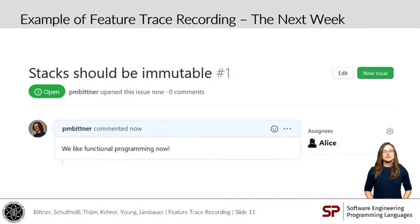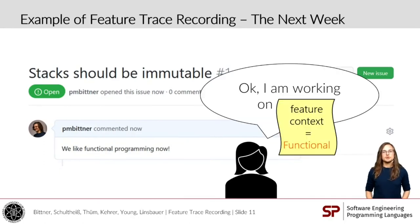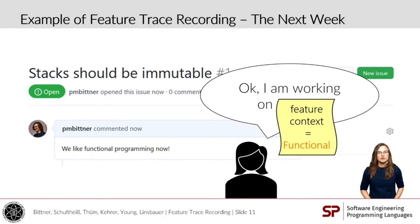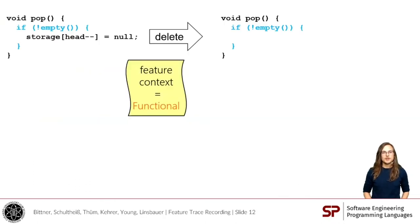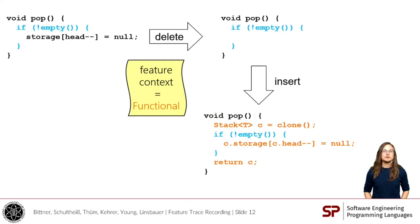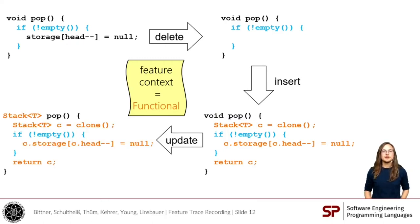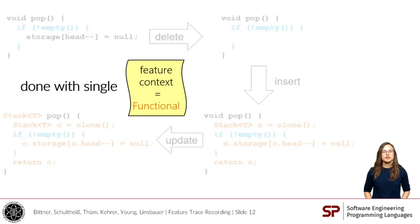The next week, Alice gets a new task: stacks should become immutable. When working on this issue, Alice knows that she's working on the feature functional, and can set the Feature Context accordingly — for example, on commit to version control, or in an integrated development environment. So first, she removes the line that changes the stack's state, which should not be allowed anymore. Second, she inserts new code that first creates a copy of the stack, alters that copy, and returns it. And finally, she also has to adapt the return type. Notably, we could derive Feature Traces for almost the entire method by now, from just the single Feature Context.